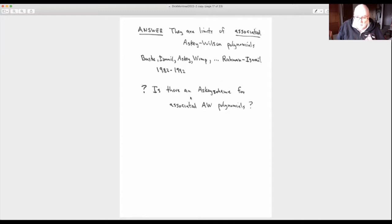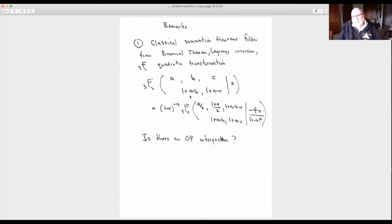There are some remarks about these ideas. Those classical summation theorems are the ones that go up through the very well-poised part and the 7F6 Dougall's theorem. You can prove all of those theorems from just three things. The binomial theorem, the Pfaff transformation, and this 3F2 quadratic transformation. Just those three things do all those well-poised theorems. Dick thought about this. I asked him, do you know an orthogonal polynomial interpretation of this transformation? No, is the answer. We still don't know this.